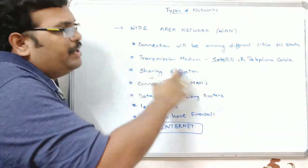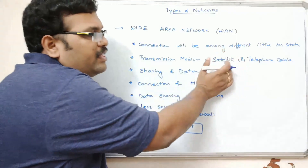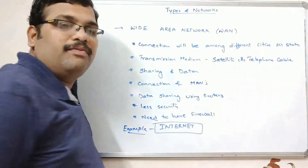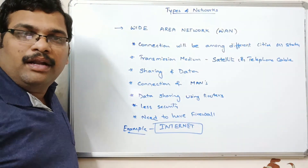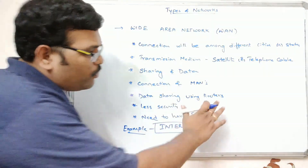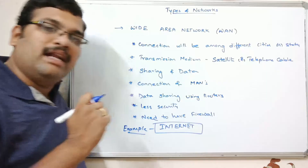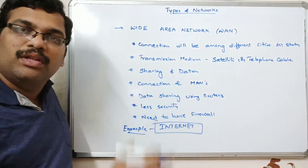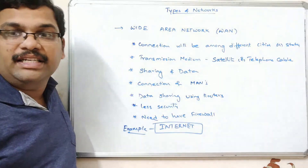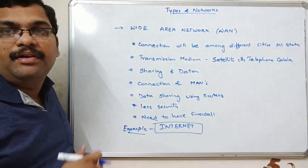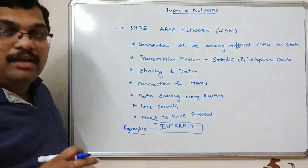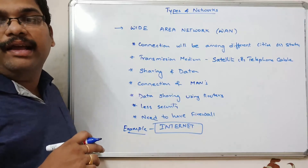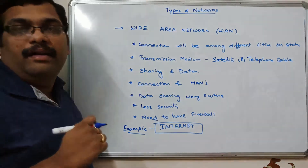The transmission media for WAN will be either satellite or telephone cables, and with the help of routers, data will be sent to the destination. This is all about the Wide Area Network.